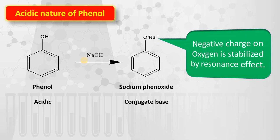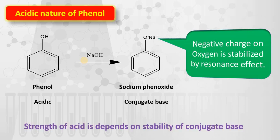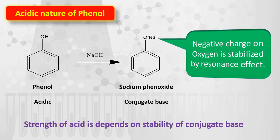The negative charge on the phenoxide ion is stabilized by the resonance effect — it undergoes delocalization with the benzene ring. The key statement here is: the strength of an acid depends on the stability of its conjugate base. As the conjugate base becomes more and more stable, the acid becomes more and more stronger.